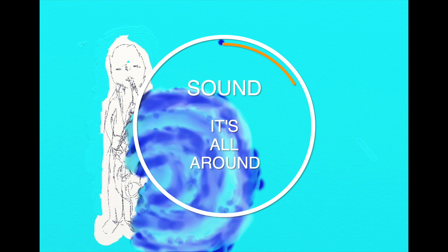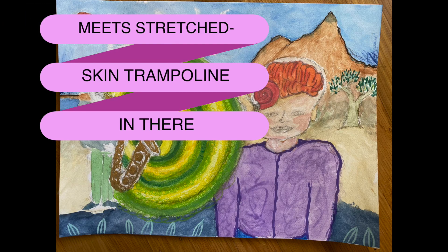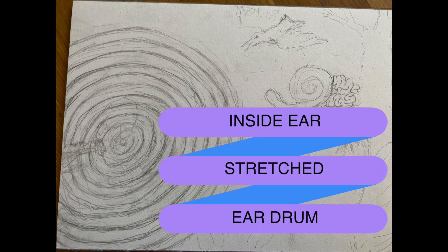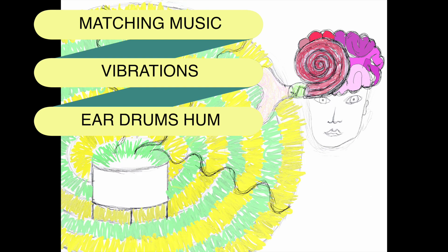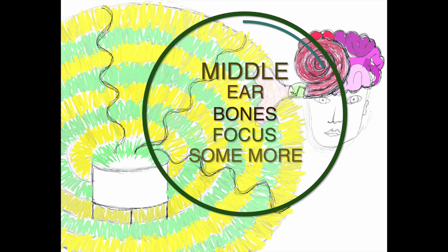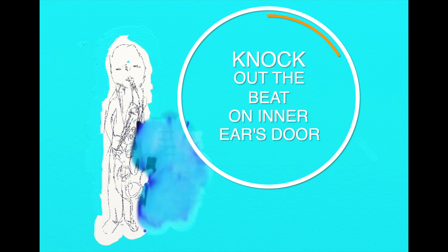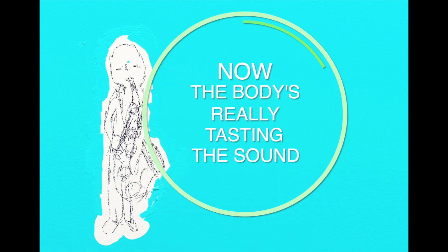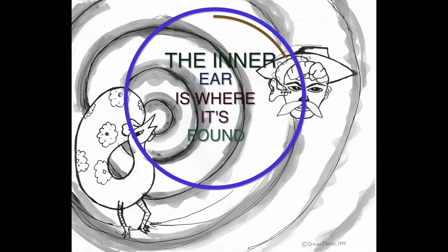Vibrating air enters ear. Meat, stretch, screen, trampoline. And there, inside ear, stretched eardrum matching vibrations, eardrum's on. Middle ear bones focus more, knock out the beat on inner ear's door. Now body's tasting sound. Inner ear is where it's found.